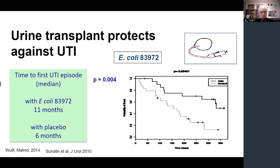Work has been done in a number of Scandinavian studies on urine transplantation — using an E. coli that does not cause symptomatic inflammation or infection — and it does protect patients with recurrent UTI. Right now this is probably best for patients with recurrent UTIs in neurogenic bladder, but it may also help patients with other chronic UTIs. I believe this is going to be a very important study focus in the near future.